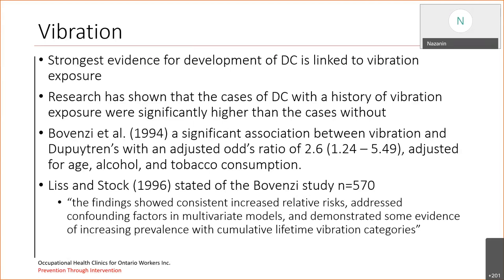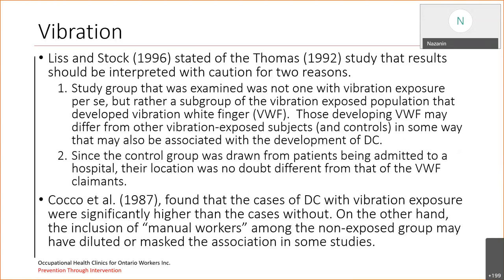The third risk factor is vibration, which has the strongest evidence for development of Dupuytren's Contracture. Research has shown that cases of Dupuytren's with a history of vibration exposure are significantly higher than cases without. Bovenzi in 1994 found a significant association between vibration and Dupuytren's with an adjusted odds ratio of 2.6, with a confidence interval of 1.24 to 5.49, adjusted in regression analysis for age, alcohol, and tobacco consumption. Liss and Stock commented that the findings showed consistent increased relative risks, addressed confounding factors in multivariate models, and demonstrated some evidence of increasing prevalence with accumulating lifetime vibration categories.